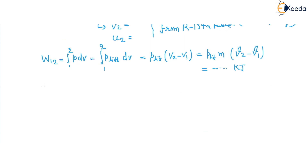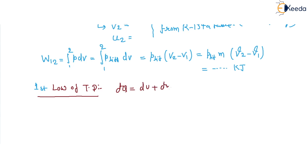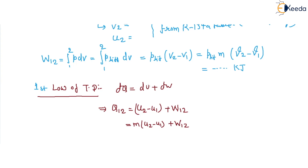Now apply the First Law of Thermodynamics. For process 1 to 2: Q = (U₂ − U₁) + W₁₂, where U represents total internal energy. So Q = m(u₂ − u₁) + W₁₂. Using the known values of m, u₂, u₁, and work done, the heat transfer is calculated to be 184.61 kJ. Thank you.